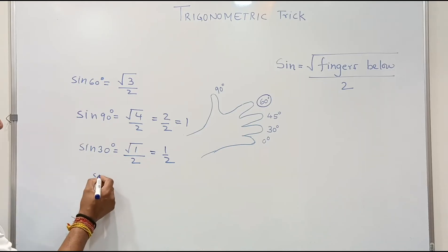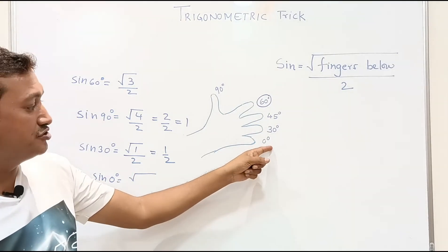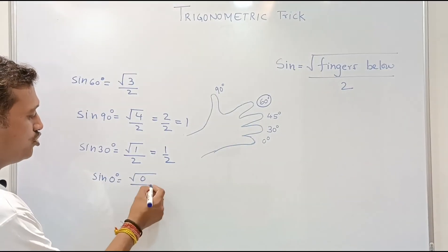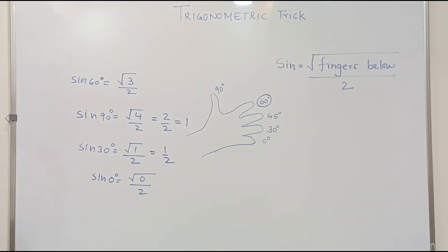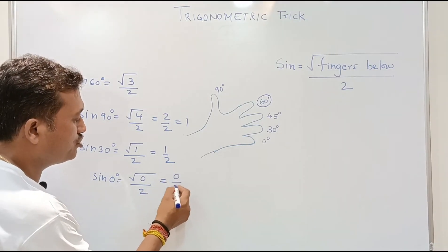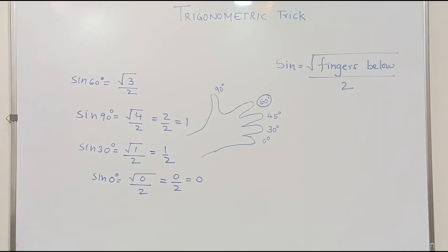Now we'll go for sine 0 degrees. Square root of fingers below. How many fingers can you see below 0 degrees? There is no finger, that means 0. Root 0 over 2, and root of 0 is 0. So sine 0 degrees is 0.